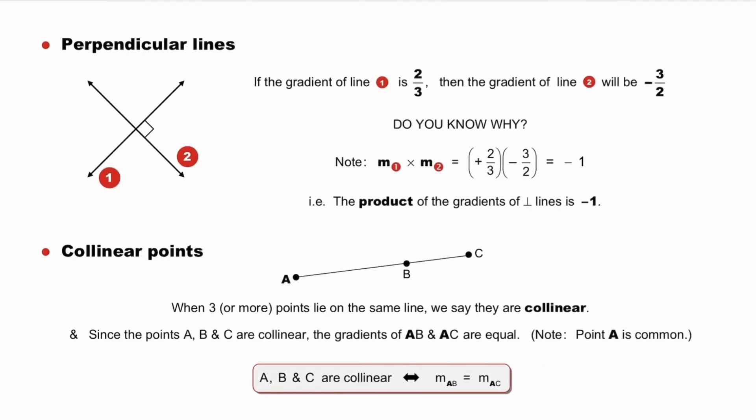And now perpendicular lines. Line 1 and line 2 are perpendicular to each other. If the gradient of line 1 is 2 thirds, then the gradient of line 2 will be minus 3 over 2, the negative reciprocal of 2 thirds. Do you know why? Give it some thought. However, the product of the gradients is plus 2 thirds times minus 3 over 2, which is minus 1. And we have the important and elegant result, i.e. the product of the gradients of perpendicular lines is minus 1.